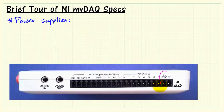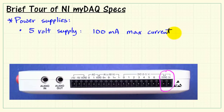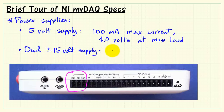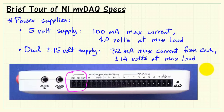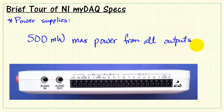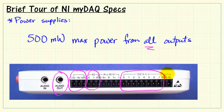Moving on to the power supplies. We have the 5 volt supply, which is perhaps the highest capacity supply with 100 milliamps maximum current. At maximum load, the voltage will drop to 4 volts. We also have the dual supply — plus-minus 15 volts — with 32 milliamps maximum current for each, resulting in plus-minus 14 volts at maximum load. Altogether, we have 500 milliwatts available from all outputs combined — that includes the power supplies, signal outputs, and everything together.